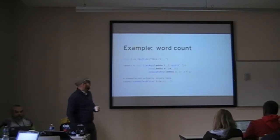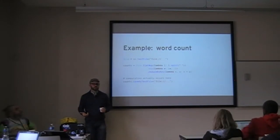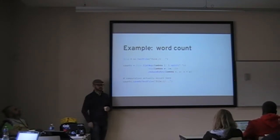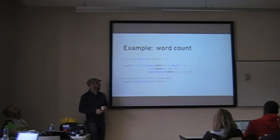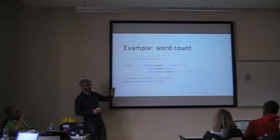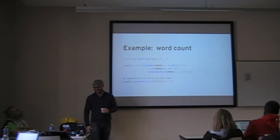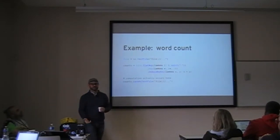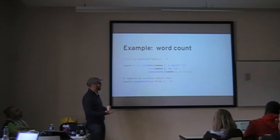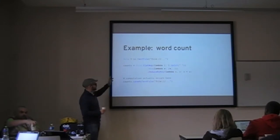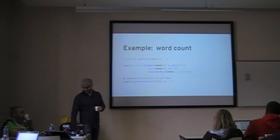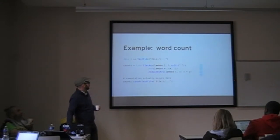A word count application in Hadoop is about 400 lines — you couldn't put it on a slide anyone could read. Word count is the hello world of distributed computing, but in Spark it's very simple Python code that fits on a slide. The compute graph says: build a distributed collection backed by lines in a text file, split on spaces, turn each word into a word-occurrence tuple, aggregate counts by adding them for each word, and save the result to a file — that's when the computation actually happens.